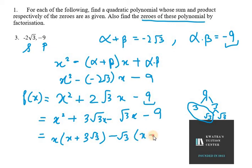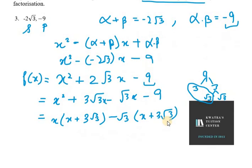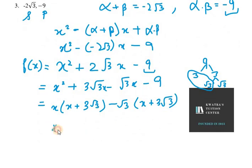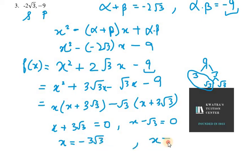Now we have two zeros: x + 3√3 = 0 and x - √3 = 0. So the first one is x = -3√3 and the second is x = √3. These are the two zeros from x² + 2√3 x - 9.